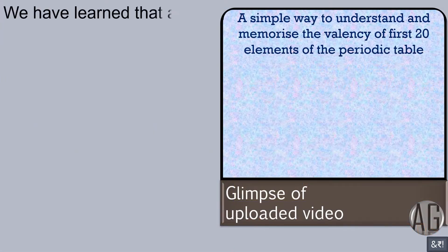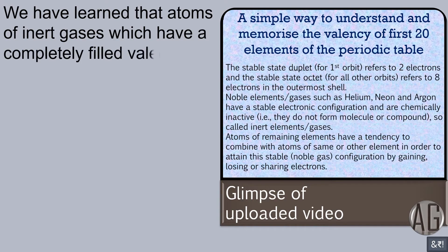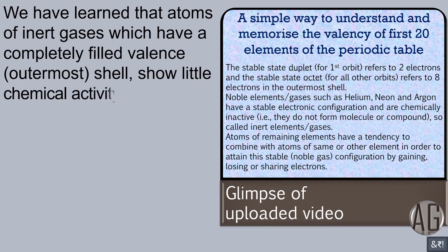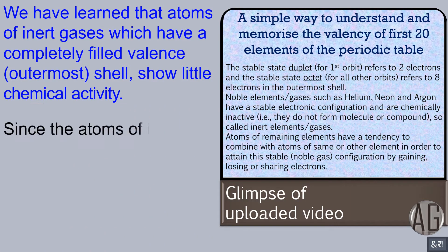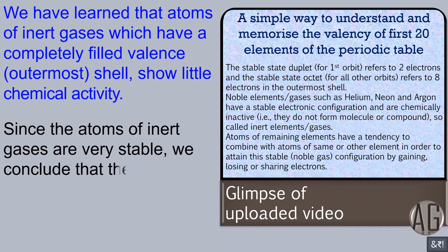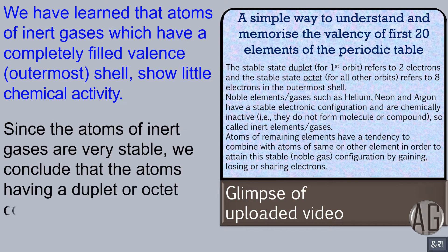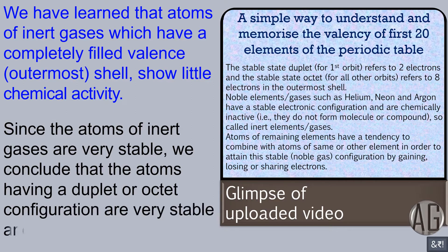We have learned that atoms of inert gases, which have a completely filled valence outermost shell, show little chemical activity. Since the atoms of inert gases are very stable, we conclude that atoms having a duplet or octet configuration are very stable and unreactive.